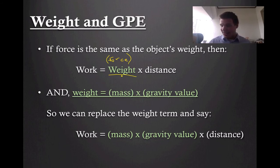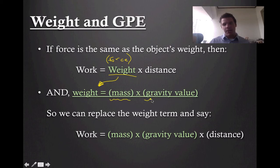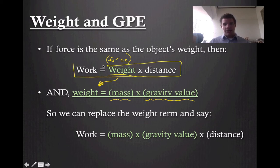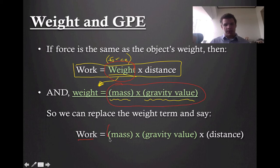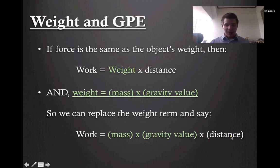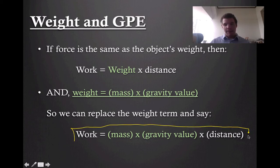Now we're going to substitute again. Weight, we just finished calculating, is equal to an object's mass times the object's gravity value. So in our work equation, we're going to replace the weight term with mass times gravity value. So I have: work equals the weight — which is the mass times the gravity value — multiplied by the distance. So just to recap, we're now at the point where our equation says work is mass times gravity value times distance. So we're multiplying three numbers now.